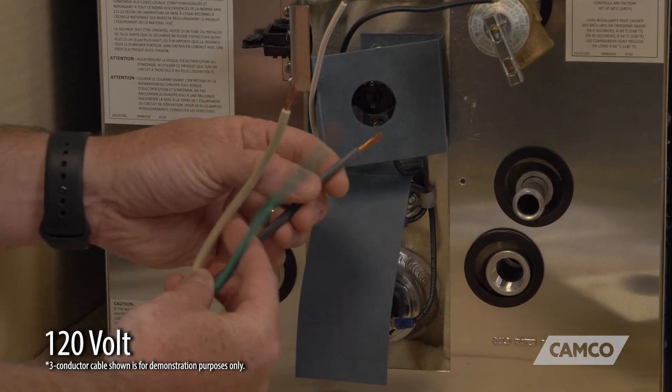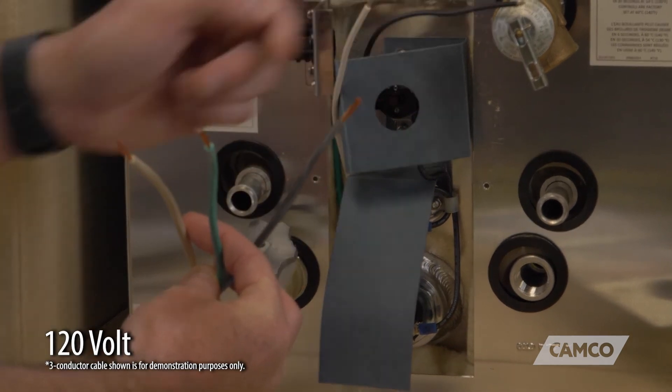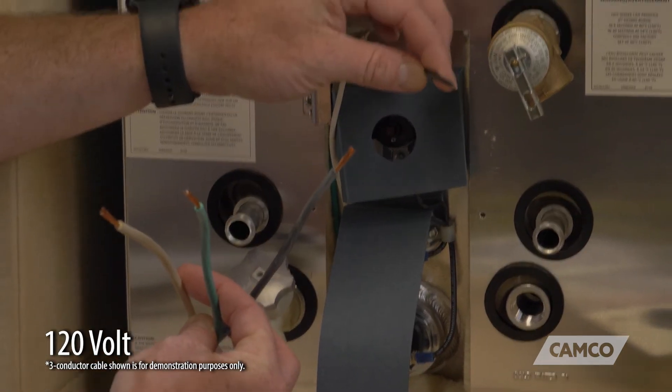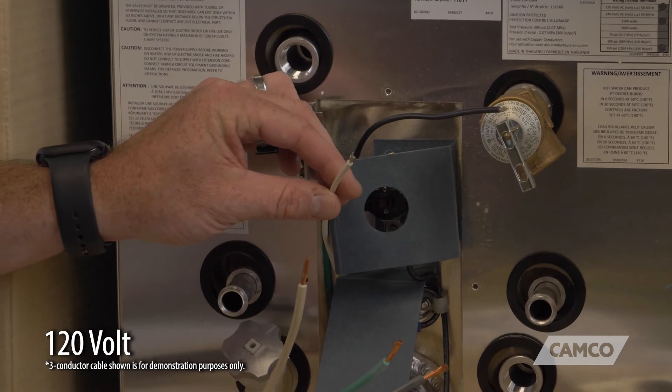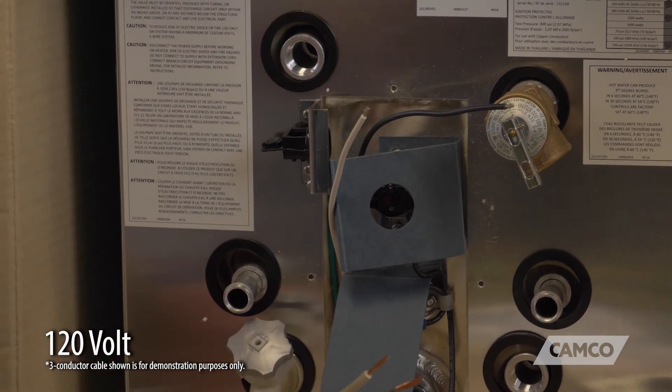And you're going to connect your black wire to the loose end black wire on your water heater. And you're going to connect your white to the loose end white wire on your water heater. Then you're going to seal it back up and you're good to go.